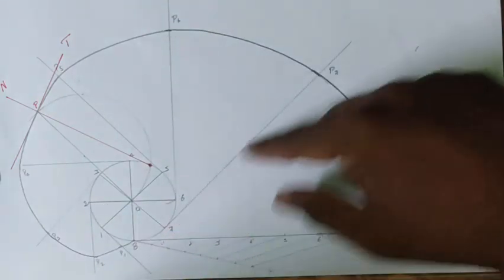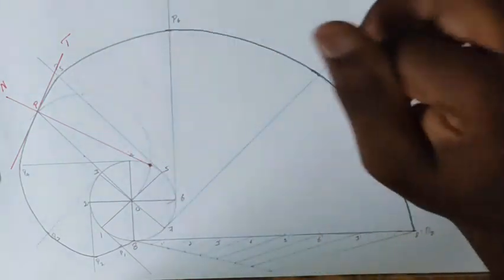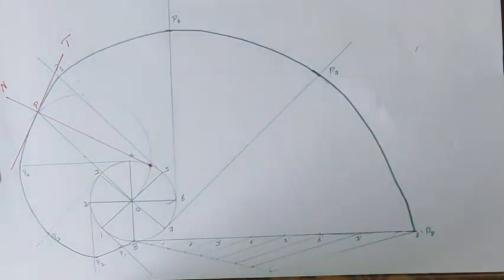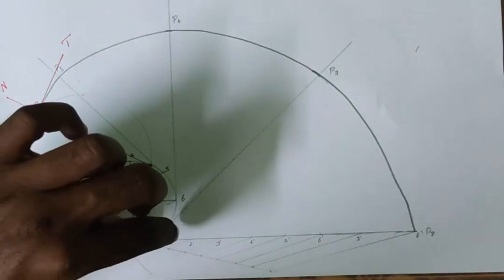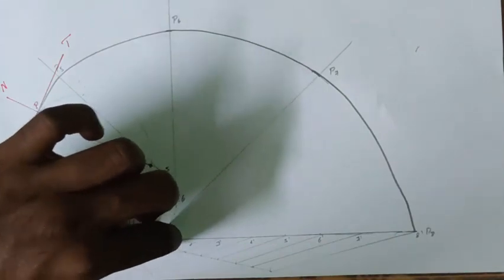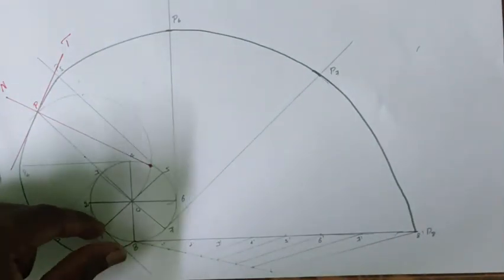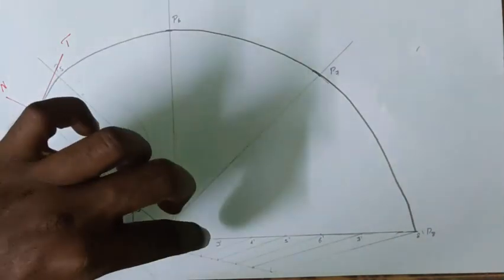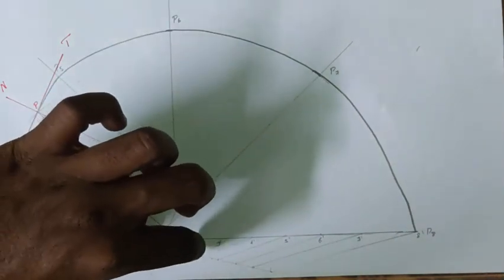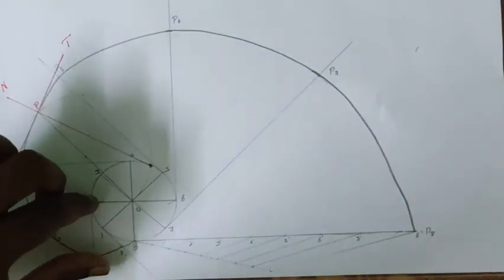And after extending all these lines, we have measured the distance from the base point to 1 and we have cut a point from 1 to P1. Similarly, from base point to 2 and 2 to P2.